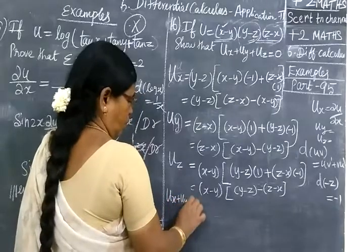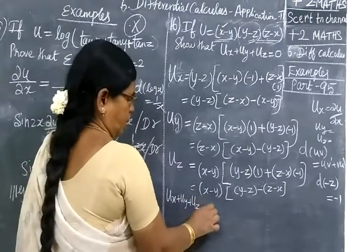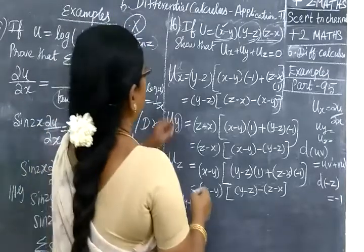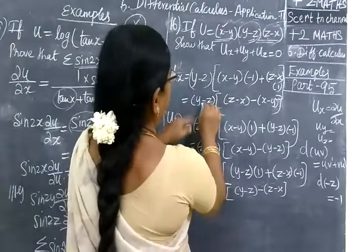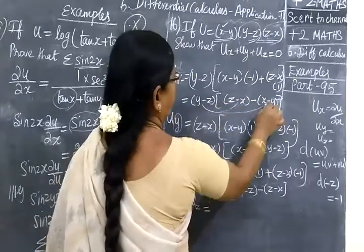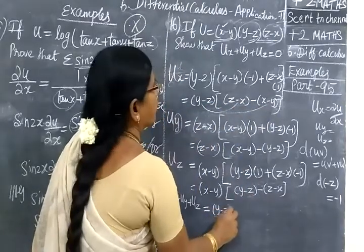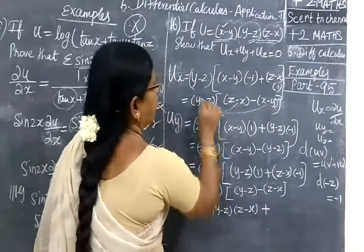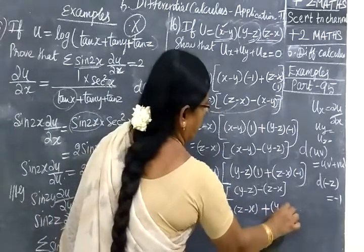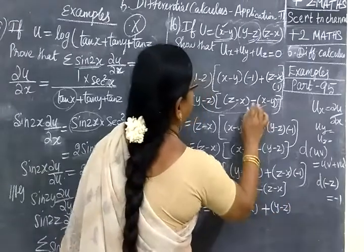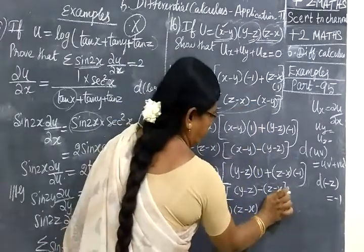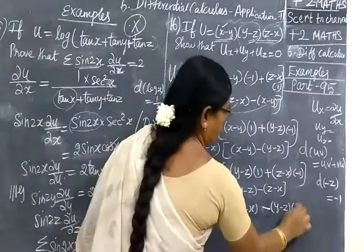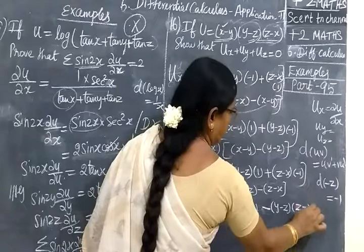So u_x plus u_y plus u_z. So this is equal to: you're rating is 10 and all. So y minus z, z minus x, plus y minus z minus x, x minus z, z minus x.